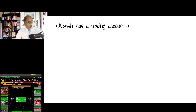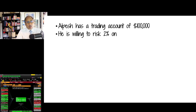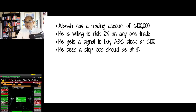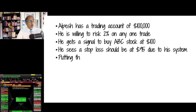Let's say there's a wonderful hedge fund manager called Alpesh who has a trading account of just $100,000. He is willing to risk 2% of his portfolio — his equity — on any one trade. He gets a signal to buy ABC stock at $100, and he sees a stop loss that should be at $95 due to his system.